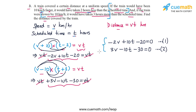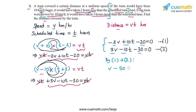We now have a pair of linear equations. The coefficient of t is plus 10 in equation 1 and minus 10 in equation 2, so we can use elimination by simply adding the two equations. Adding gives: (3v − 2v) plus (−20 − 30) equals 0, which simplifies to v minus 50 equals 0, so v equals 50.